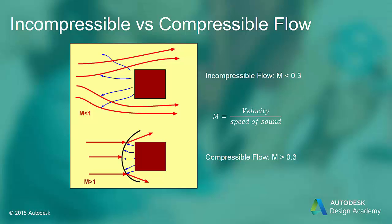Another classification of fluid flow is compressibility. If a flow is incompressible, the effect of pressure on density is quite small and can be ignored. The density can be treated as a constant, which can greatly simplify the analysis. As density is constant, fluid flow can be solved by continuity and momentum equations alone. However, if the flow of a gas is treated as incompressible, then the study of shock waves is ruled out.